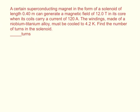A certain superconducting magnet in the form of a solenoid of length 0.4 meters can generate a magnetic field of 12 tesla in its core. When its coils carry a current of 120 amps, the windings made of a niobium titanium alloy must be cooled to 4.2 Kelvin. Find the number of turns in the solenoid.